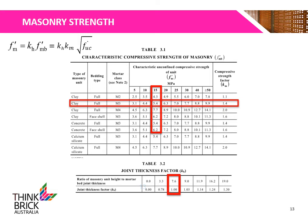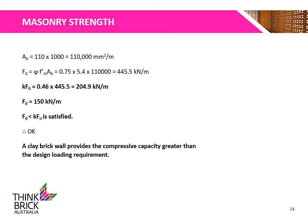The characteristic compressive strength of the masonry and the unconfined compressive strength of the masonry units are determined from Tables 3.1 and 3.2 respectively. Using full-bedded M3 mortar with standard brick units, we determine the characteristic compressive strength of the masonry system. The bedded area Ab is 110,000 mm² per meter run. Using the reduction factors Phi and K, the factored compressive capacity is 204.9 kN per meter. As the design loading of 150 kN/m is less than 204.9 kN/m, the criterion is met and the wall is acceptable.